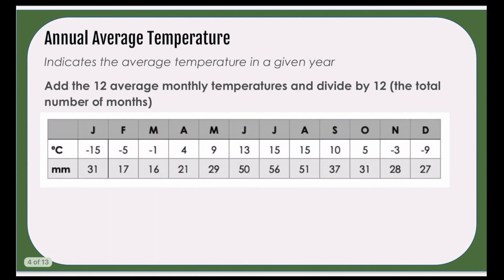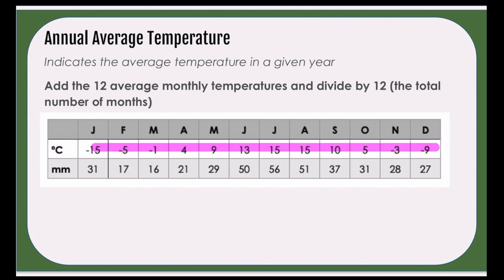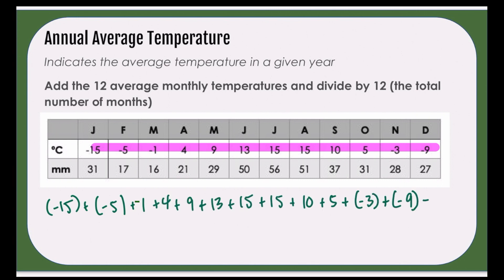For our annual average temperature, we are going to add up all of our average temperatures for every single month and divide by 12, which is the total number of months. So you're going to take your negative 15, plus your negative five, plus your negative one, and on and on to get your total. Our total in this case is going to be 38.